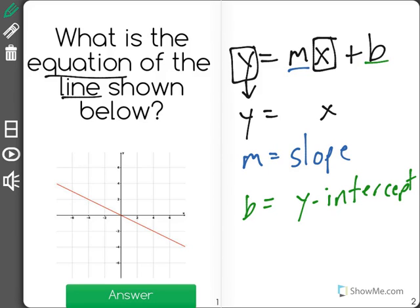So let's go ahead and find the easy one first, the y-intercept. That is where on the y-axis, right here, does the line cross. And I can see the line crosses right here at point 0. So we're going to have y equals something x plus 0.